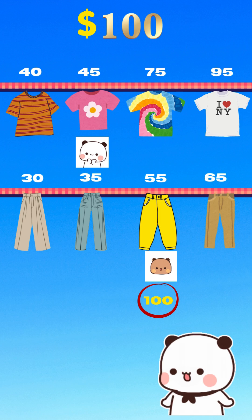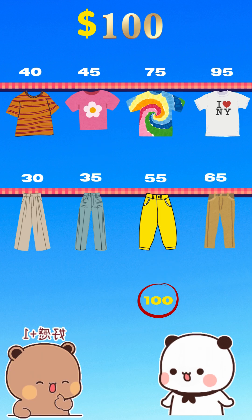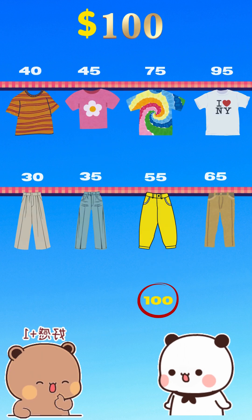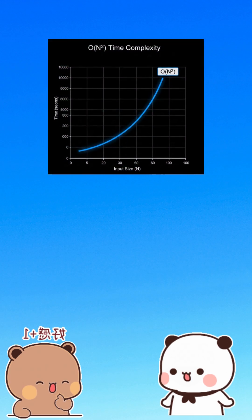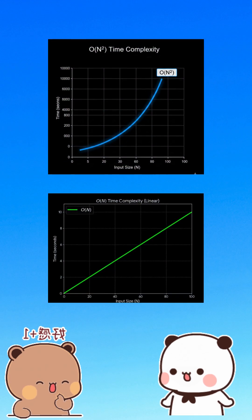Oh wow, that is simple! Congrats — you just learned the two-pointer trick. Seriously? That mall example was that? Yep. Your method was O(N²). This one is O(N).